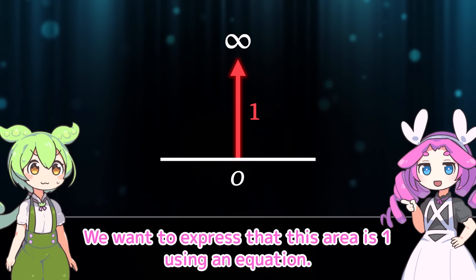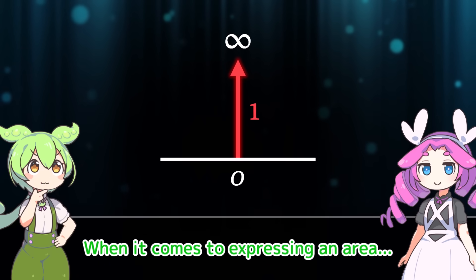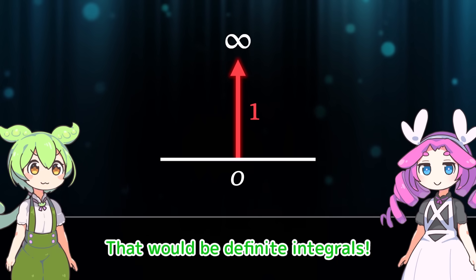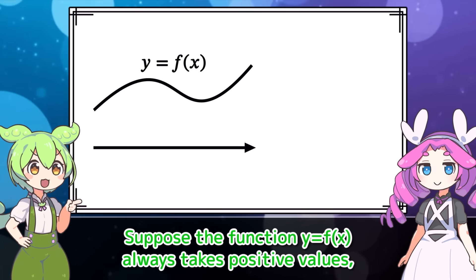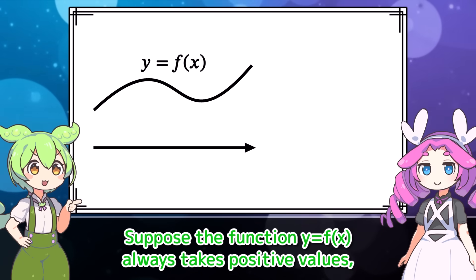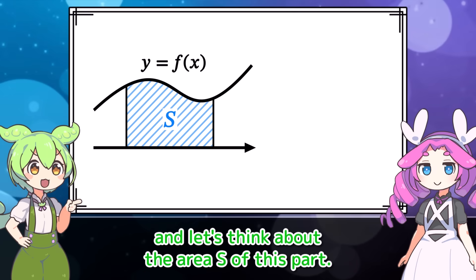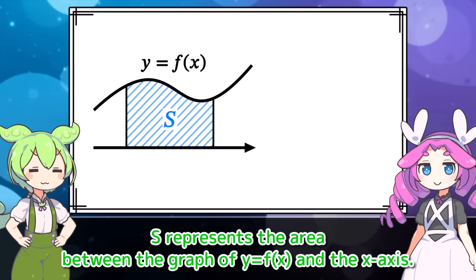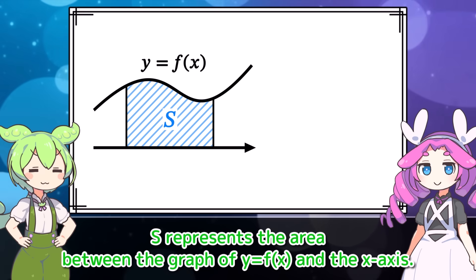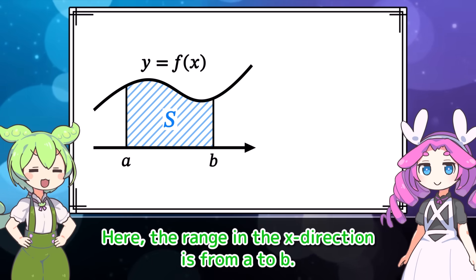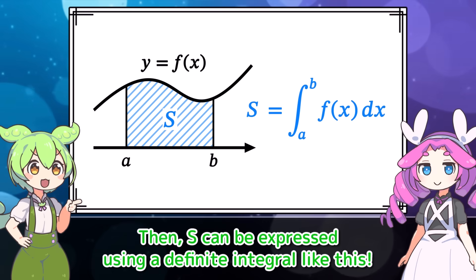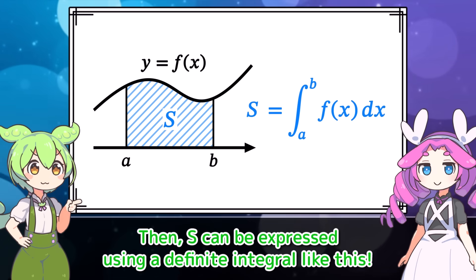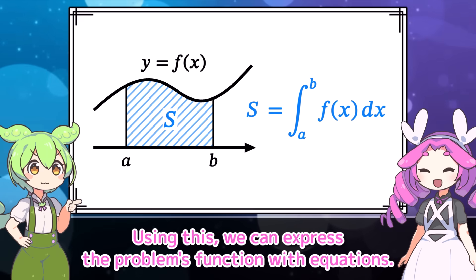We want to express that this area is 1 using an equation. When it comes to expressing an area, that would be definite integrals. Suppose the function y equals f of x always takes positive values. The area s represents the region between the graph of y equals f of x and the x-axis, where the range in the x direction is from a to b. Then s can be expressed using a definite integral like this. Using this, we can express the problem's function with equations.